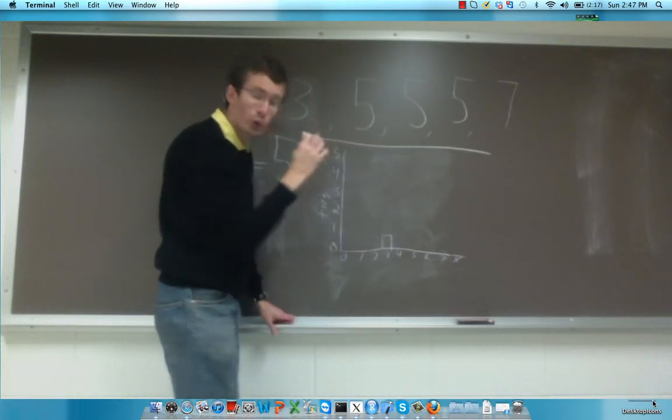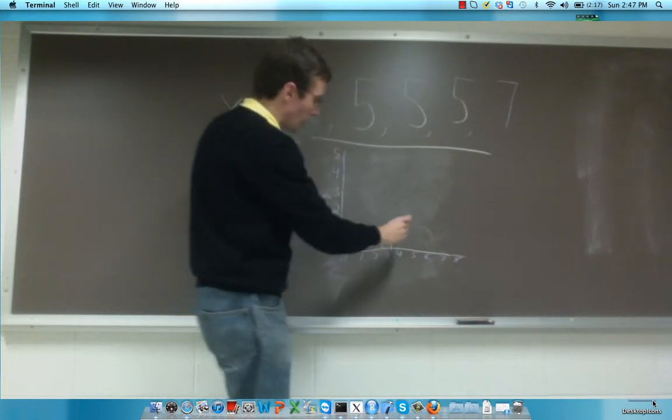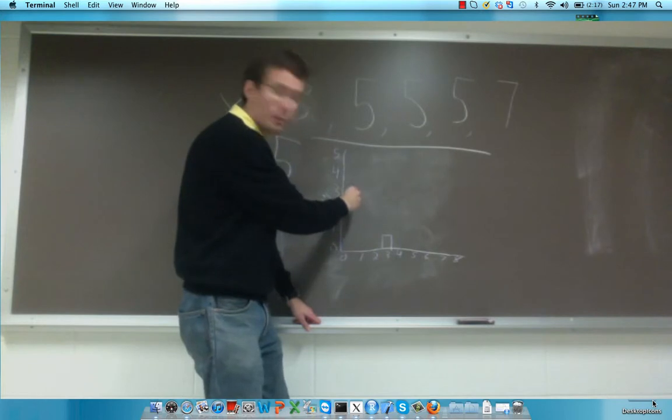For 5, there were 3 observations. It has a frequency of 3, and so the bar we plot over 5 goes up to 3.